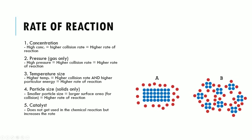Temperature — a higher temperature means that individual particles have more energy. Not only that, but because they're traveling at a higher speed, the collision rate will also be higher. So both factors will be elevated, therefore increasing the rate of a chemical reaction.